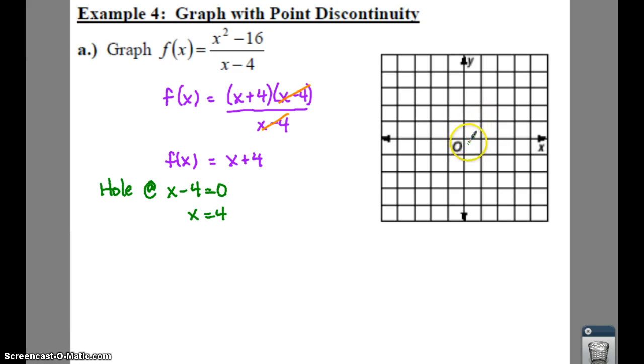If we start our graph at plus 4, put a dot here, up 1 over 1, well x equals 4 is way over here. So your graph is going to be off.